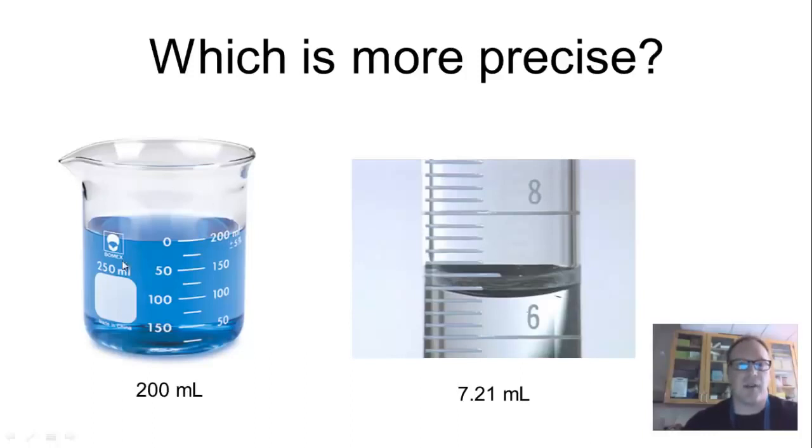So when you look at these two pictures, what we have here on the left is liquid which has some blue coloring in it probably, in a beaker. And this is some clear liquid that's in a graduated cylinder, and this is a close-up photo. Now, these numbers down here, this 200 mL, that means milliliters, has to do with this particular amount of liquid in this beaker. And this 7.21 milliliters has to do with this amount of liquid in this graduated cylinder. So when you look at these two values, which do you think is more precise?